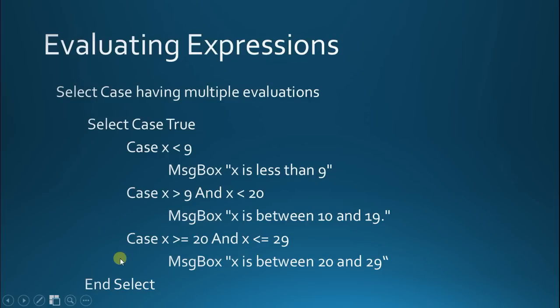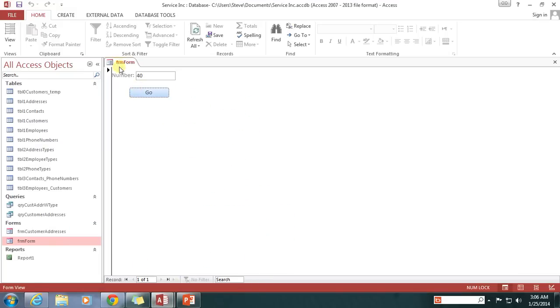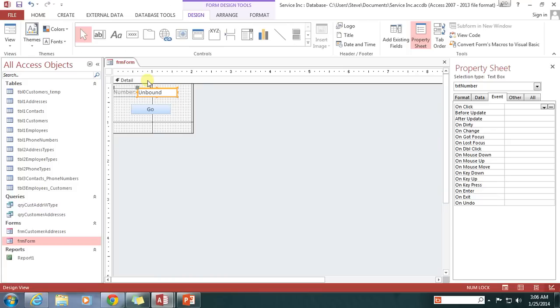Alright, so let's go ahead and hop out into our code here, and let's look at a couple of examples. First, I just want to show you, this is a text box here, where the user is going to be able to enter some number into it. We've given it the name TXT number. Then we have a go button, which when it's clicked on, we have this event handler.